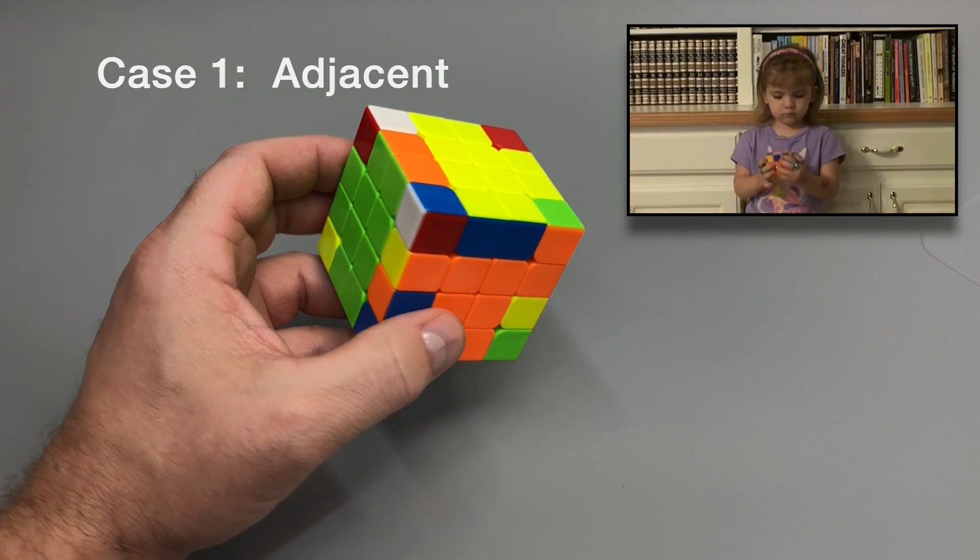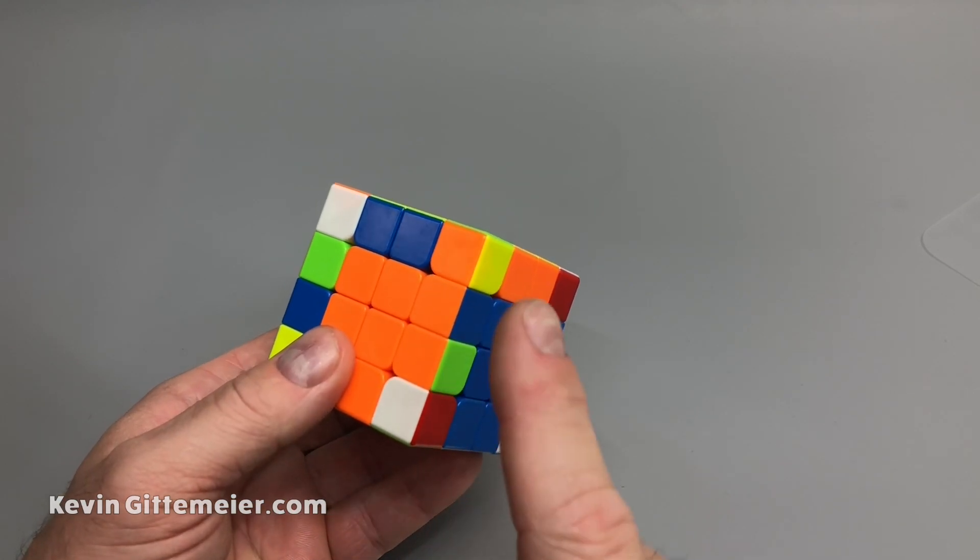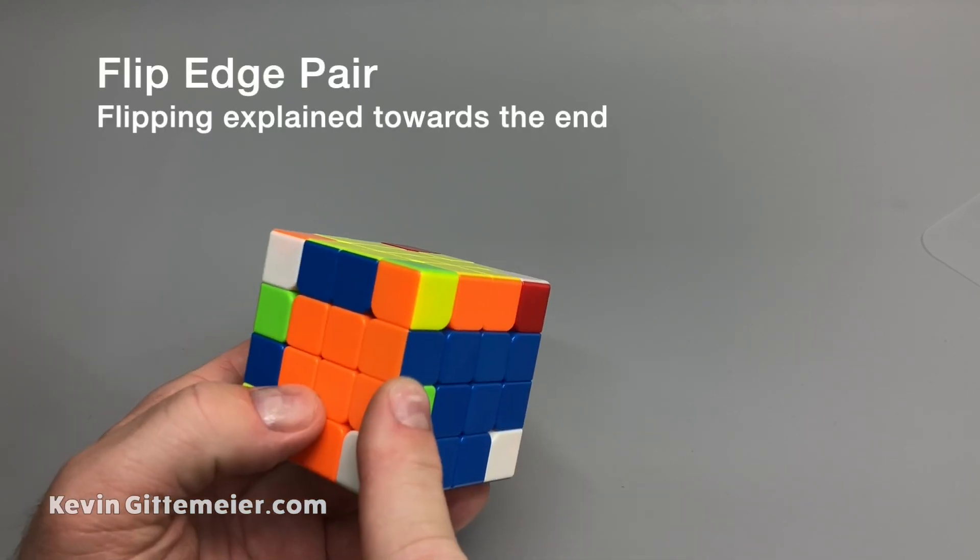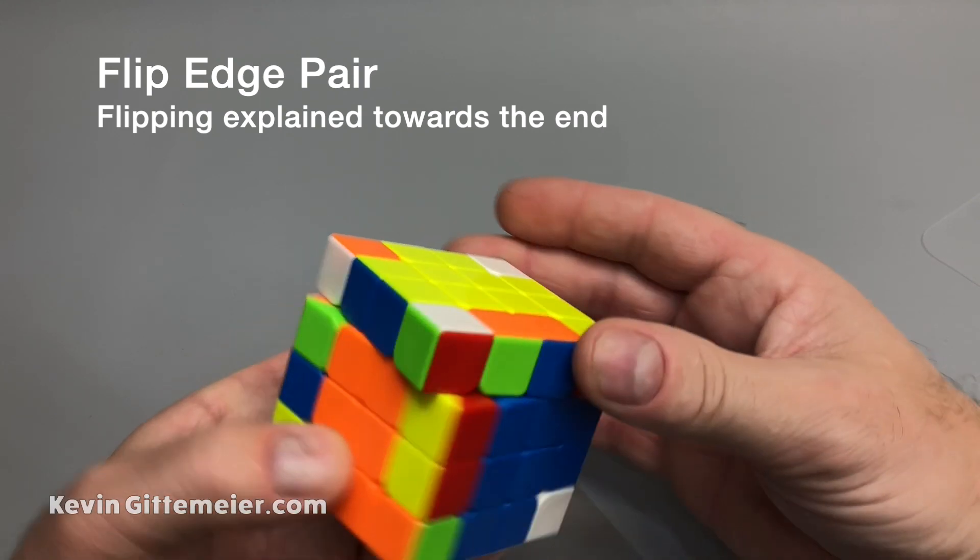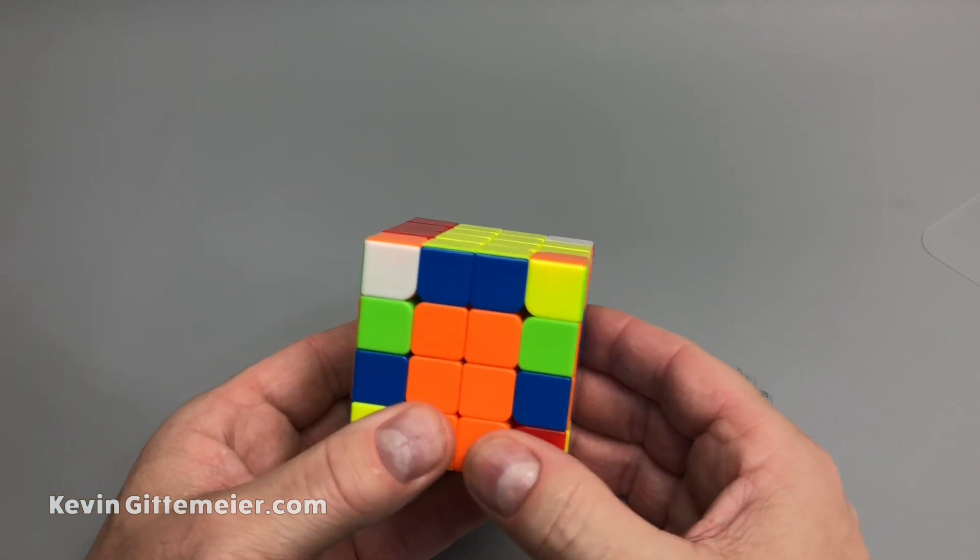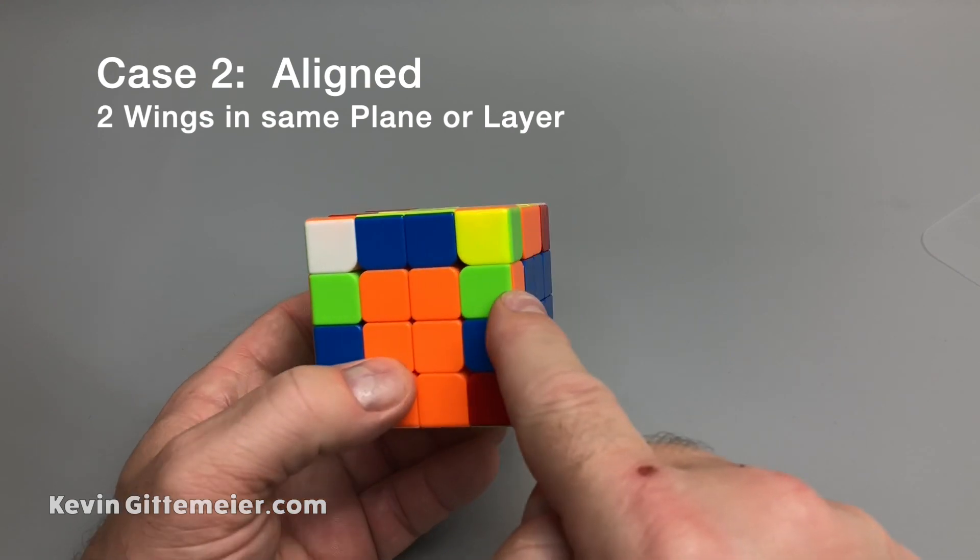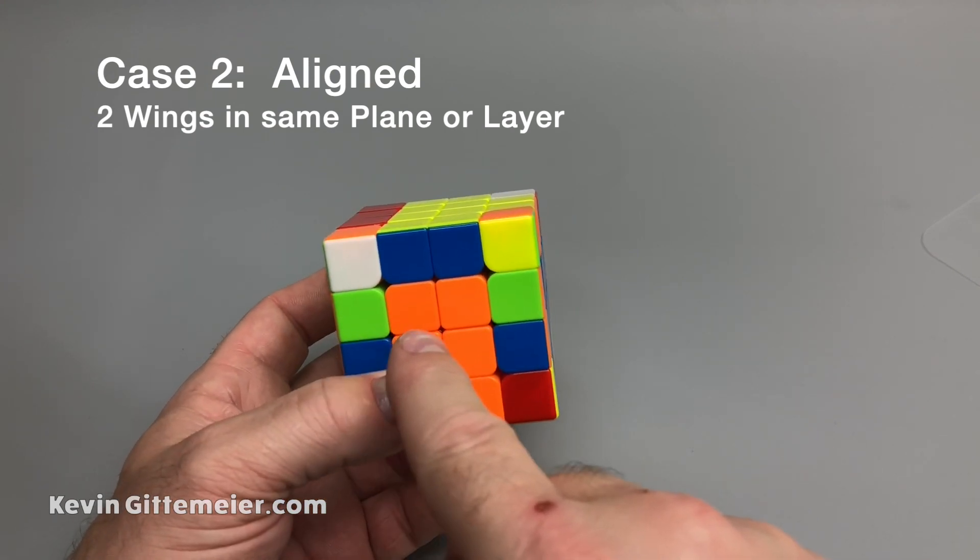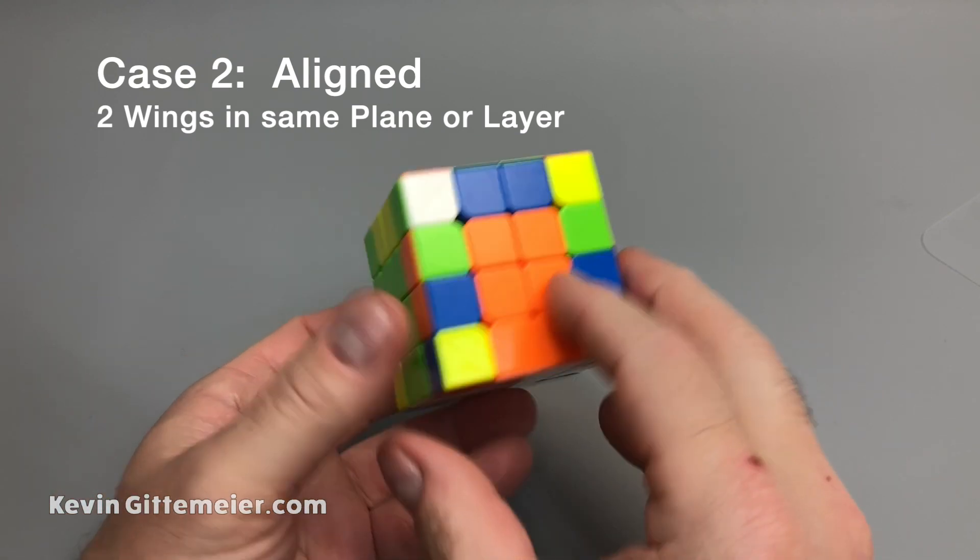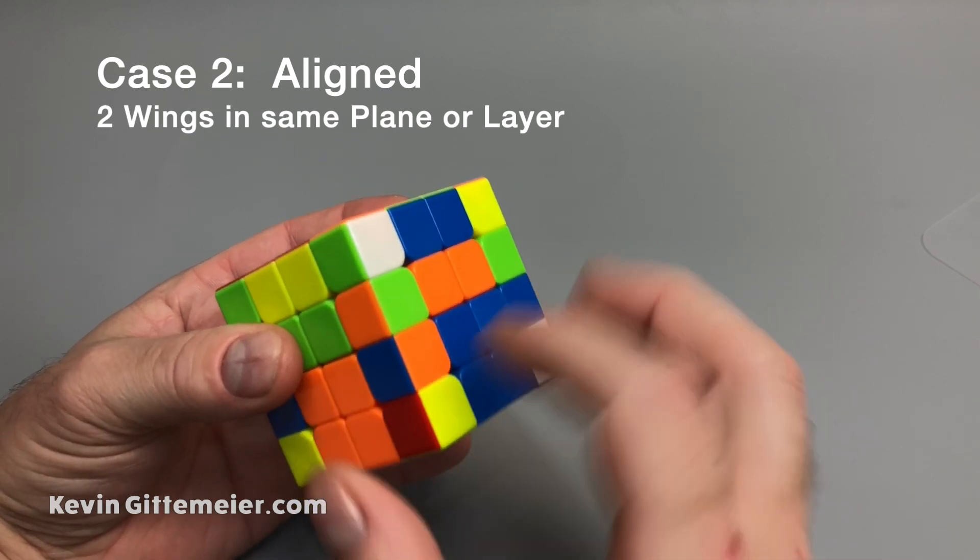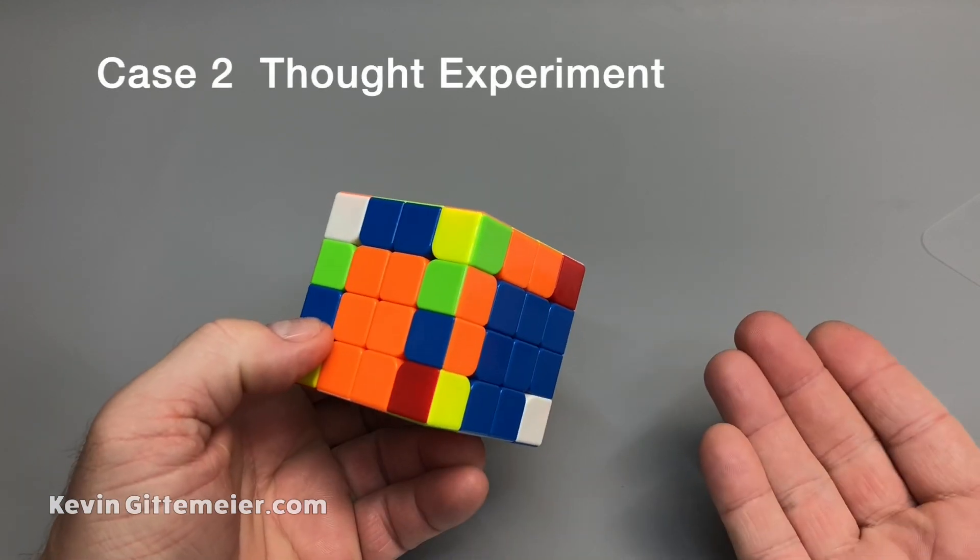Now we're going to look at the other scenario by flipping this edge pair. By now you should know how to flip edge pairs, but if not I'll go over it thoroughly at the end. So now once I flip this edge pair it actually looks worse because these two wings are in the same layer with each other. And when I move this orange-green over, it just kicks that orange-green out of the way. Same thing down here at the bottom. If I move that orange-blue over, it just kicks that one out of the way.